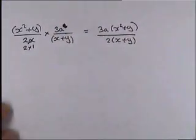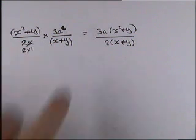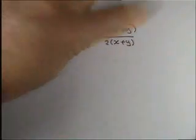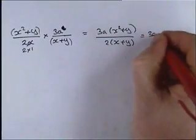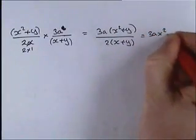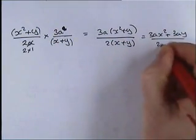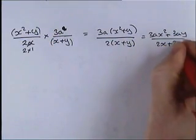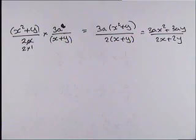Don't cancel incorrectly — you might be led to think this x and this x can cancel, but they can't because the numerator is x squared plus y and the denominator is x plus y, and those two aren't the same. So that leaves us with 3a(x squared plus y) over 2(x plus y), and that's as far as it can go. You could multiply the brackets out, but in fractions we try to leave things factorised because it's simpler.